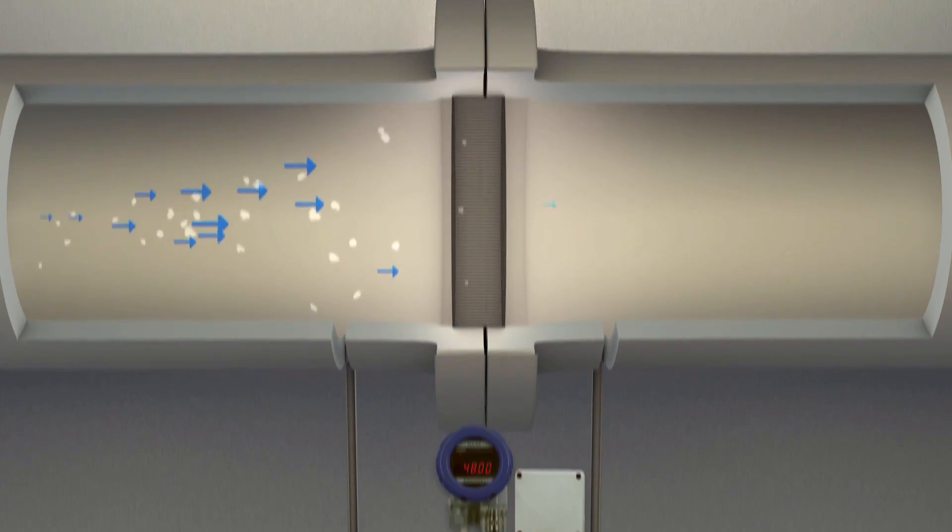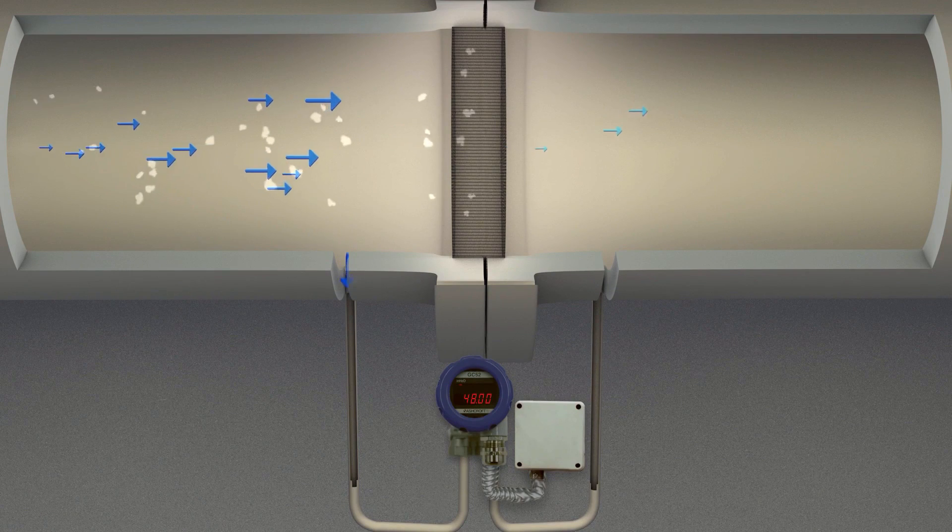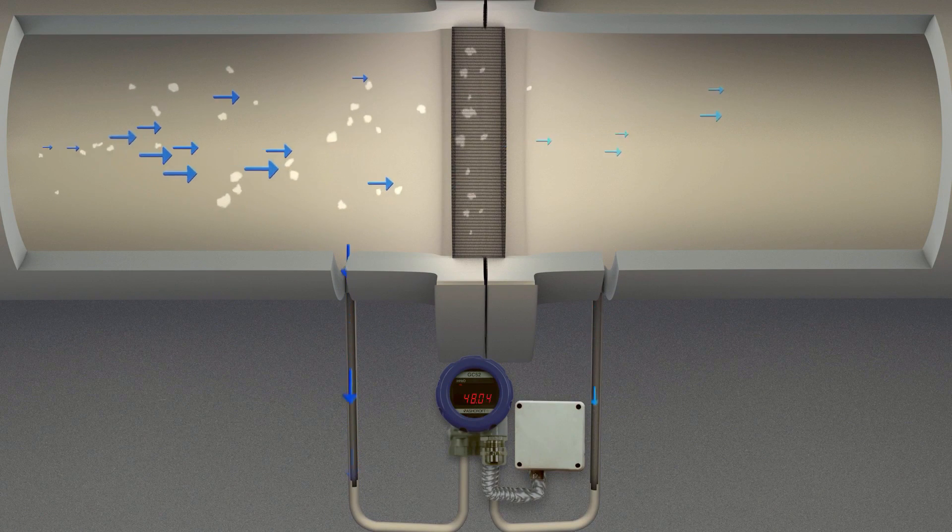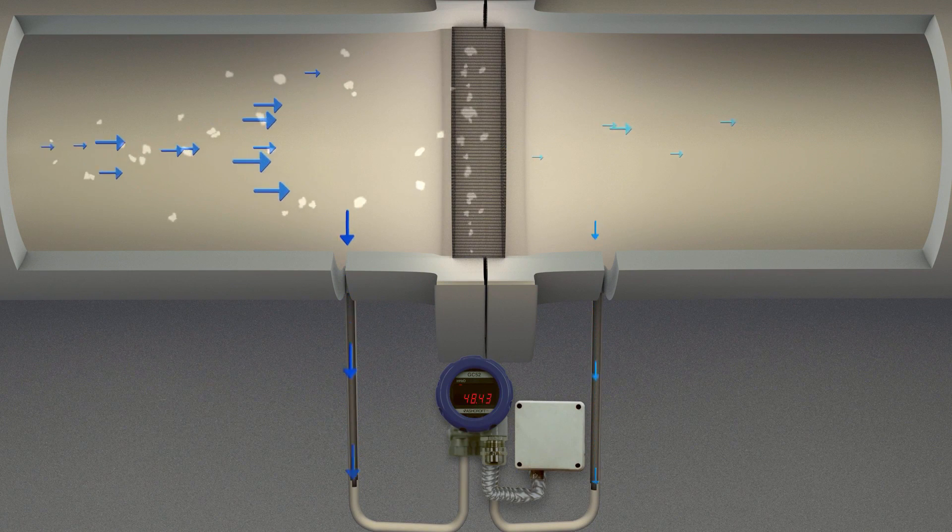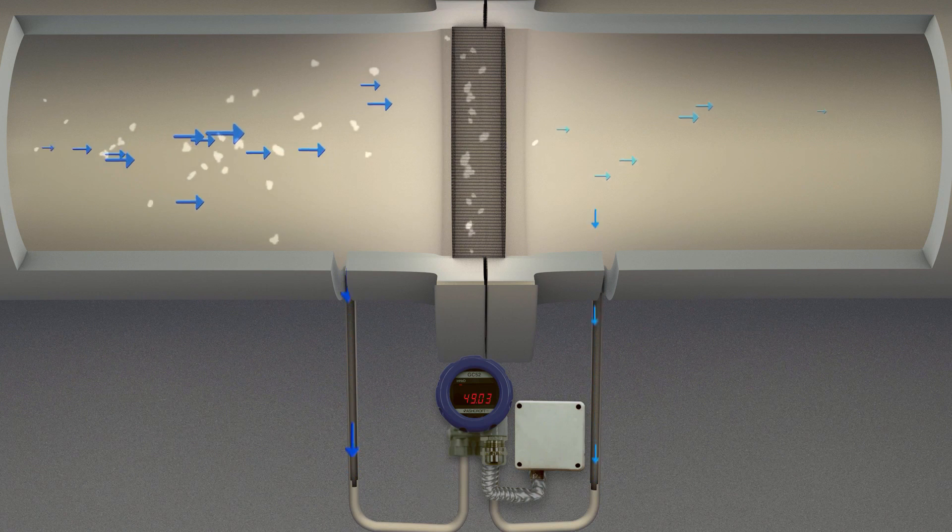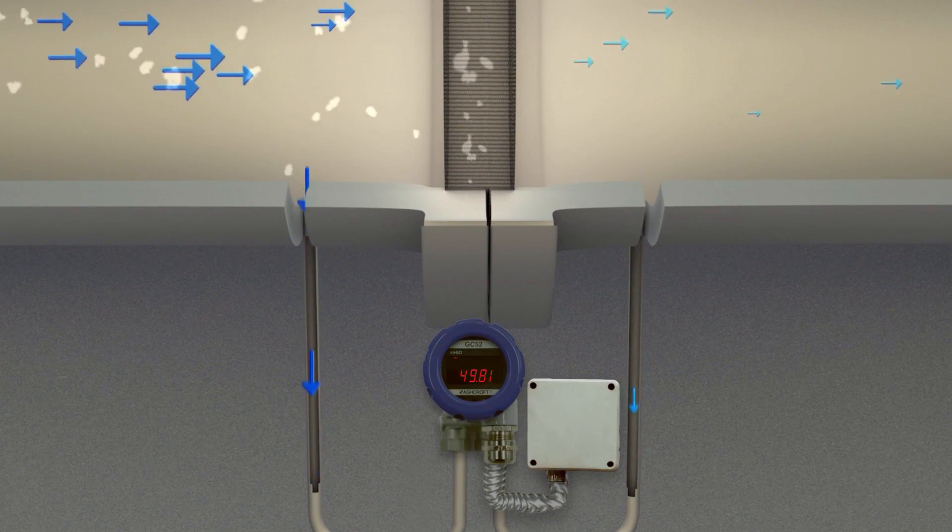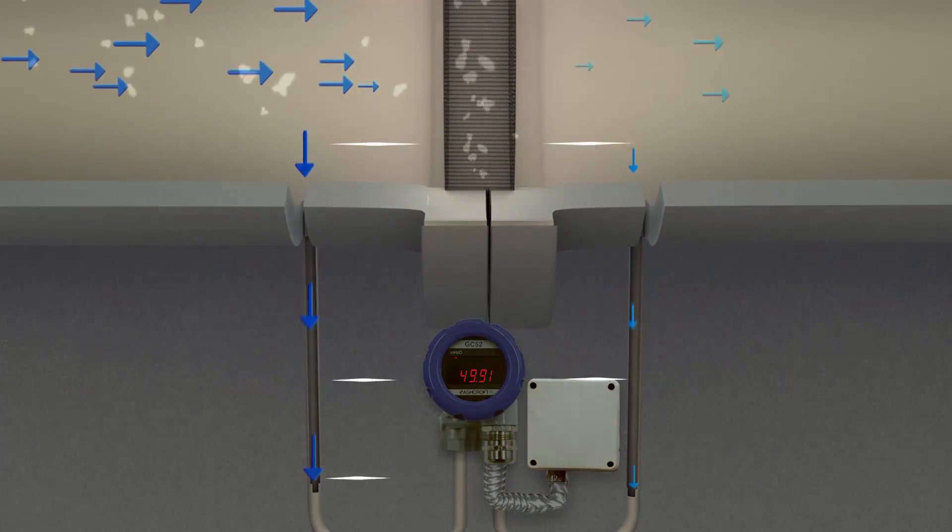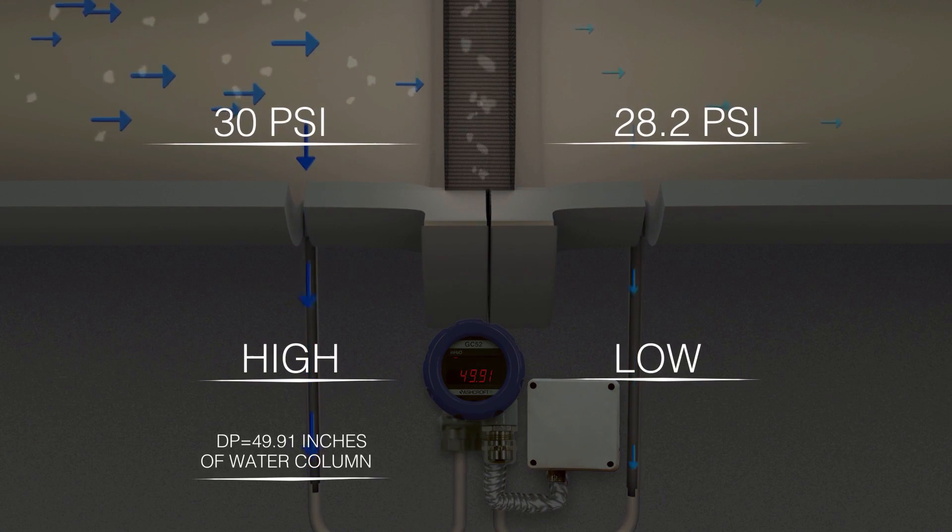Placing taps both before and after the filter, a differential pressure measuring instrument can be connected to detect the high side and low side pressures. The instrument will report the difference between the two sides. The saturation point will be indicated when the delta P value reaches a predetermined threshold.